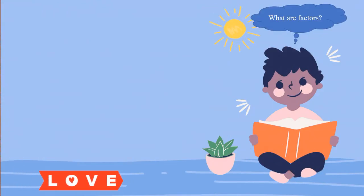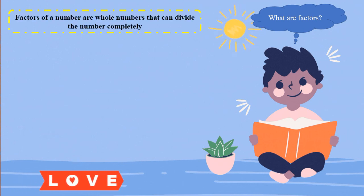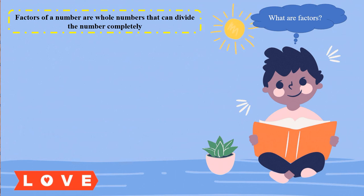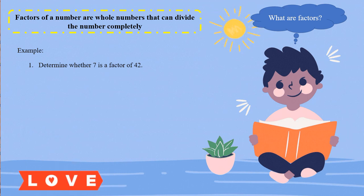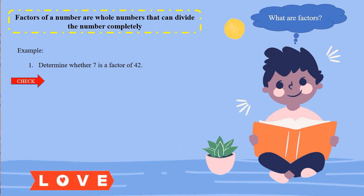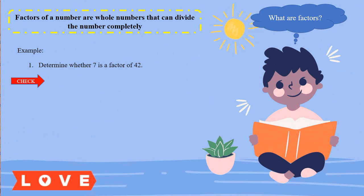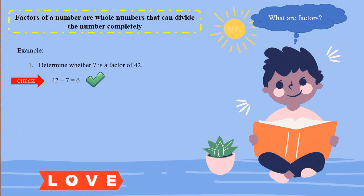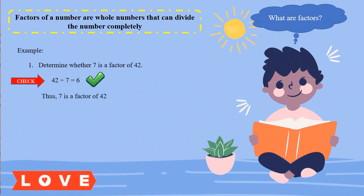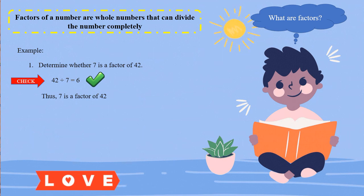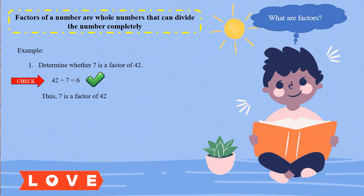What are factors? Factors of a number are whole numbers that can divide the number completely. For example, determine whether 7 is a factor of 42. So we check: is 42 divisible by 7? 42 divided by 7 is equal to 6. So yes, we can divide 42 by 7, which means 7 is a factor of 42. If you can divide completely without any remainder, that number is a factor of the given number.